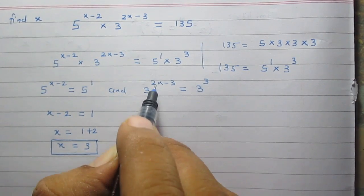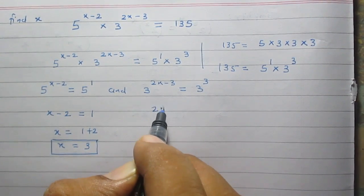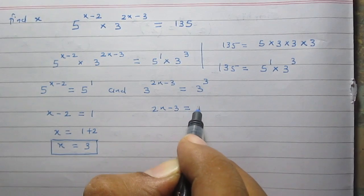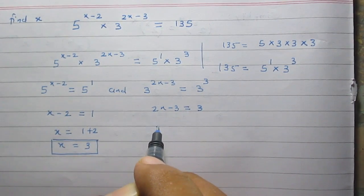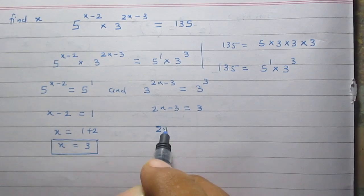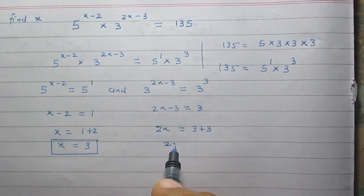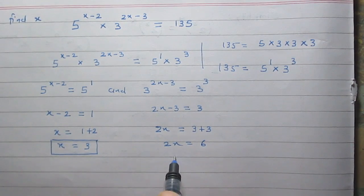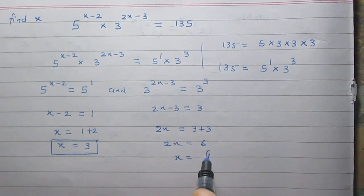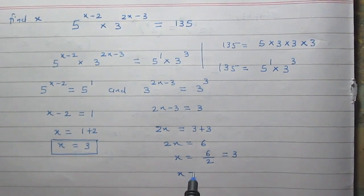Now according to the second situation we can say 2x minus 3 must be equal to 3. It is another linear equation. So we will get 2x is equal to 3 plus 3. 2x is equal to 6 or you can say x is equal to 6 upon 2 which is 3. So here the result is also x is equal to 3.